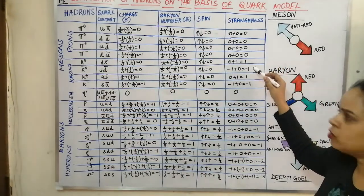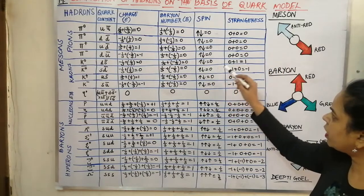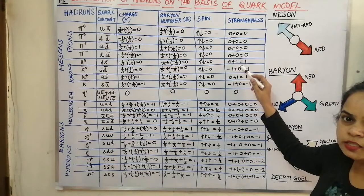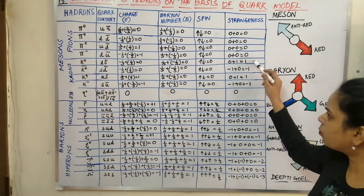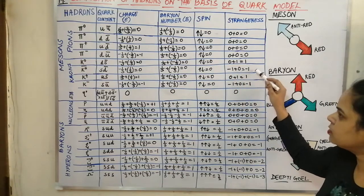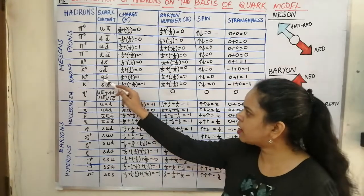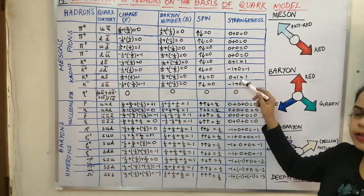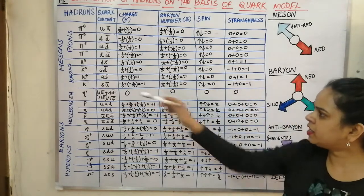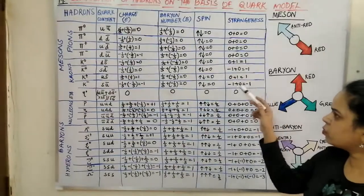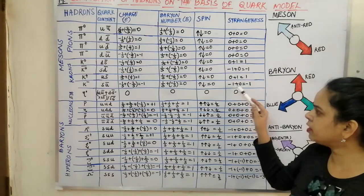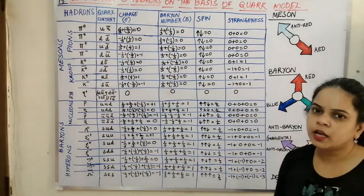The kaons are strange particles. For K⁰, it is d·s̄: d has strangeness 0 and s̄ has strangeness +1, so K⁰ has strangeness +1. K̄⁰ has strangeness −1. K⁺ is u·s̄: u has strangeness 0, s̄ has strangeness +1, giving strangeness +1. K⁻ has the combination of s·ū, so s has strangeness −1 and ū has 0, giving strangeness −1.